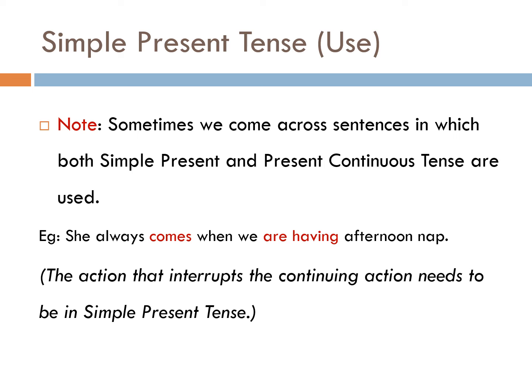इस sentence में अगर आप notice करें, there are two actions: number 1 is 'comes' and number 2 is 'are having'. ये दो verbs हैं जो अलग-अलग actions बता रहे हैं. The action that interrupts the continuing action needs to be in simple present tense. Continuous में होता है जो continuity में चल रहा है, और अगर कोई action उस continuous action को interrupt करता है, we use simple present tense in such case. She always comes when we are having afternoon nap — जब हम afternoon में सो रहे होते हैं, continuity में है action, तब वो आ जाती है — she always comes. तो जो interrupted action है, the action that is interrupting, वो simple present tense में है.